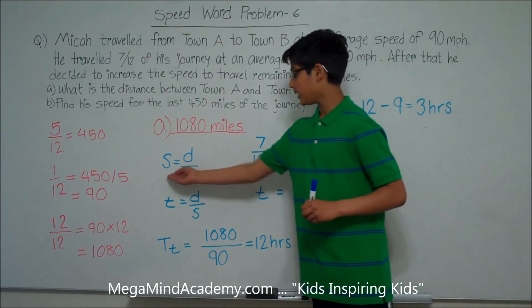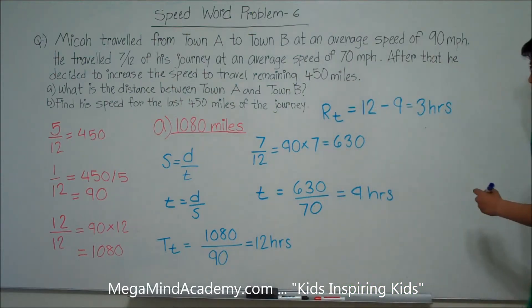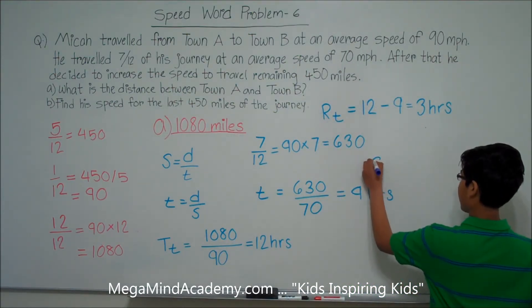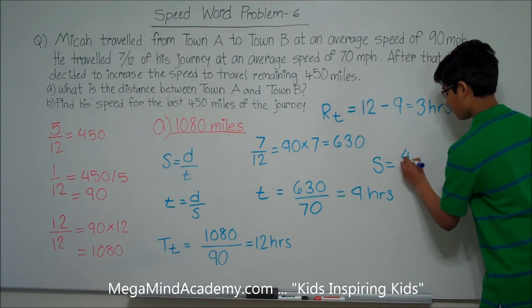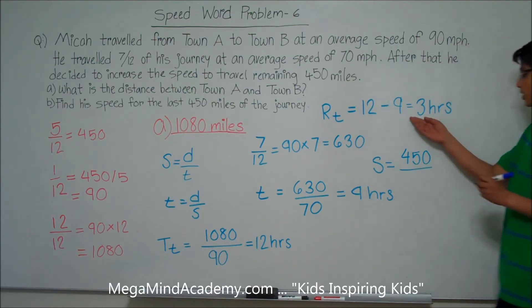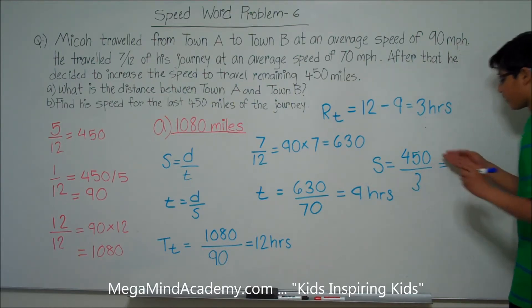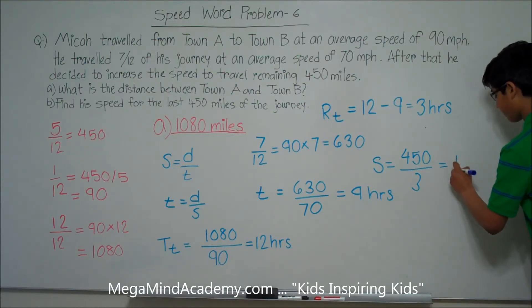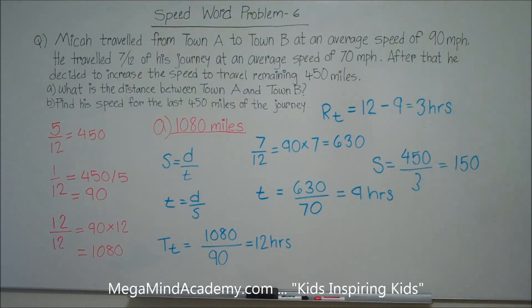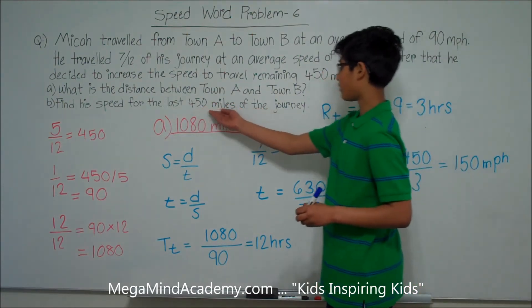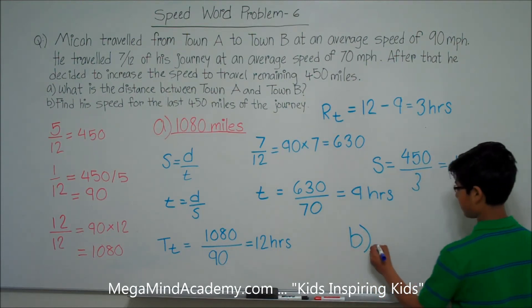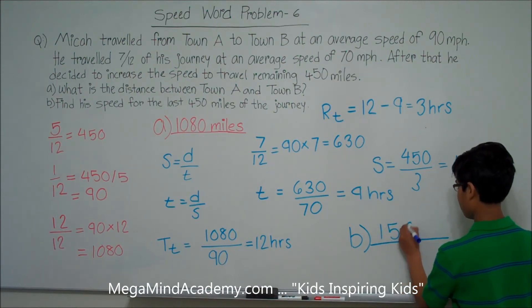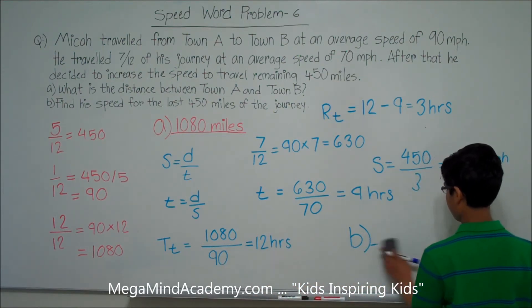We know that speed is equal to distance over time. So the speed S is equal to the distance, which is 450 miles, over the time, which is 3 hours. So 450 over 3 is equal to 150. This means that Micah travels at a speed of 150 miles per hour for the last 450 miles of the journey. So B, the answer to question B is 150 miles per hour.